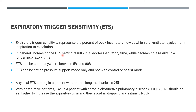As inspiration ends early and expiration begins, decreasing expiratory trigger sensitivity means a longer inspiratory time. Its value is usually set at 25% in patients with normal lung mechanics. With obstructive airway disease, its value can be increased in order to increase expiratory time, hence avoiding air trapping and auto-PEEP.